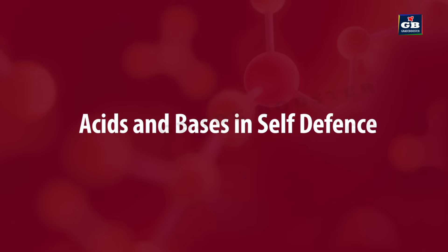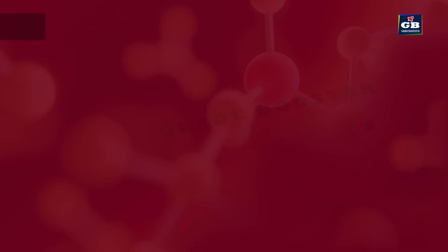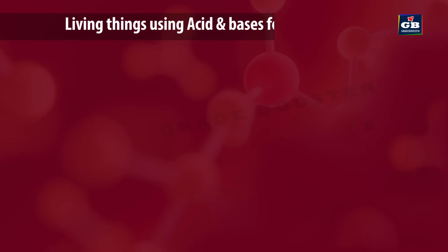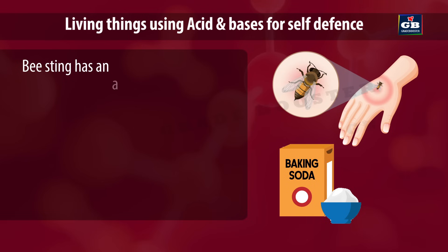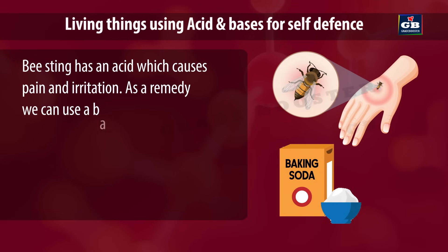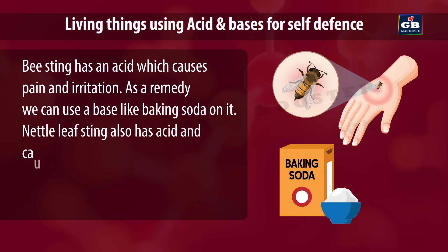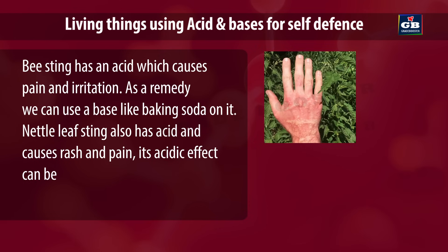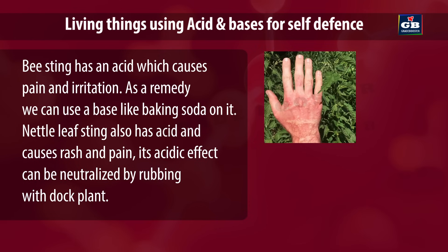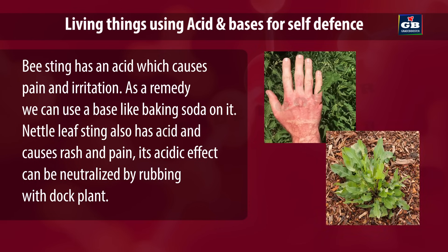Acids and bases in self-defense. Living things use acids and bases for their defense. Bee sting has an acid which causes pain and irritation — as a remedy, we can use a base like baking soda on it. Nettle leaf sting also has acid and causes rash and pain. Its acidic effect can be neutralized by rubbing with a dock plant.